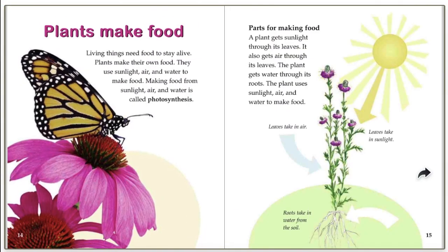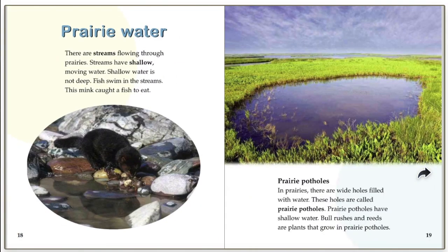I think I remember us reading about that yesterday. Let's look. Prairie water. There are streams flowing through prairies. Streams are shallow moving water. Shallow water is not deep. Fish swim in the streams. This mink caught a fish to eat. Prairie potholes - in prairies there are wide holes filled with water. These holes are called prairie potholes. Prairie potholes have shallow water. Bullrushes and reeds are plants that grow in prairie potholes.